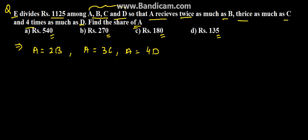Now we can also say that B is equal to 2D. Why 2D? Because A equals 4D and A equals 2B. So finding the value of B, dividing by 2, we get B equals 2D. Also, C equals 4D upon 3 because A equals 3C and A equals 4D.